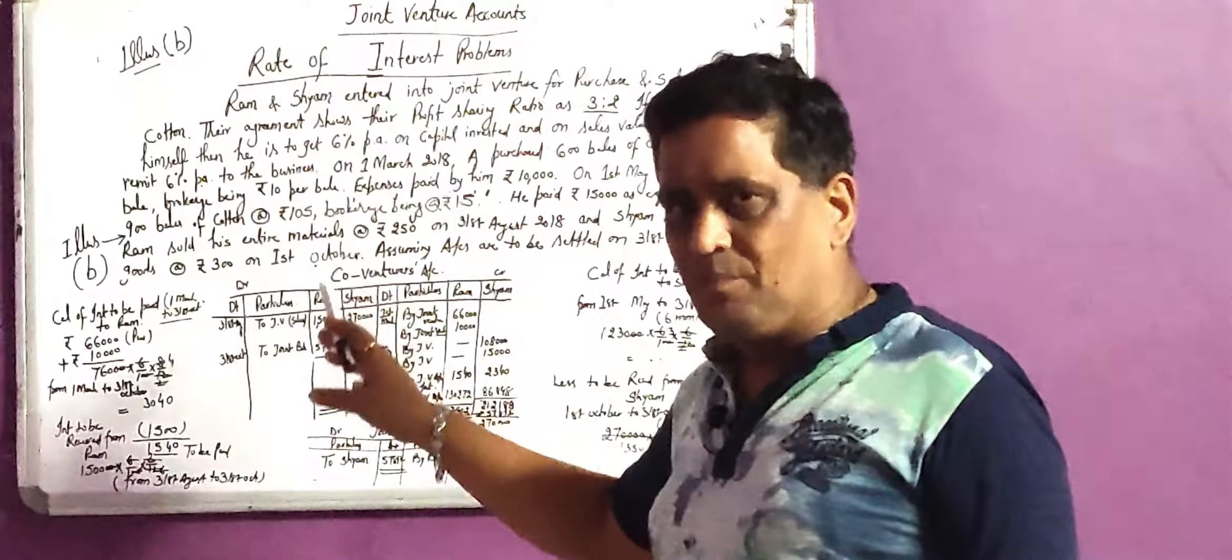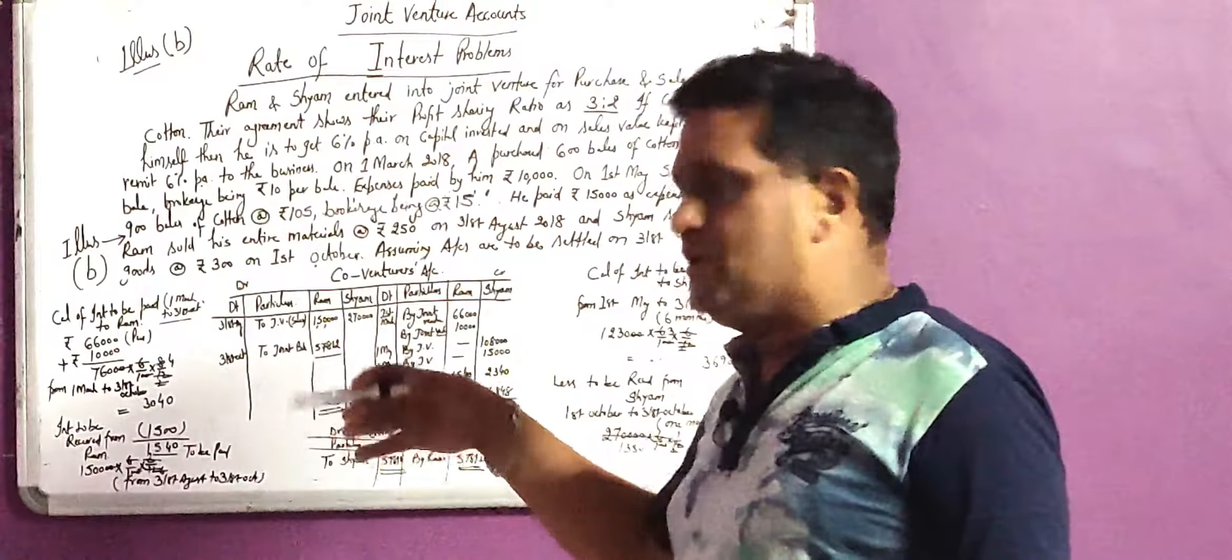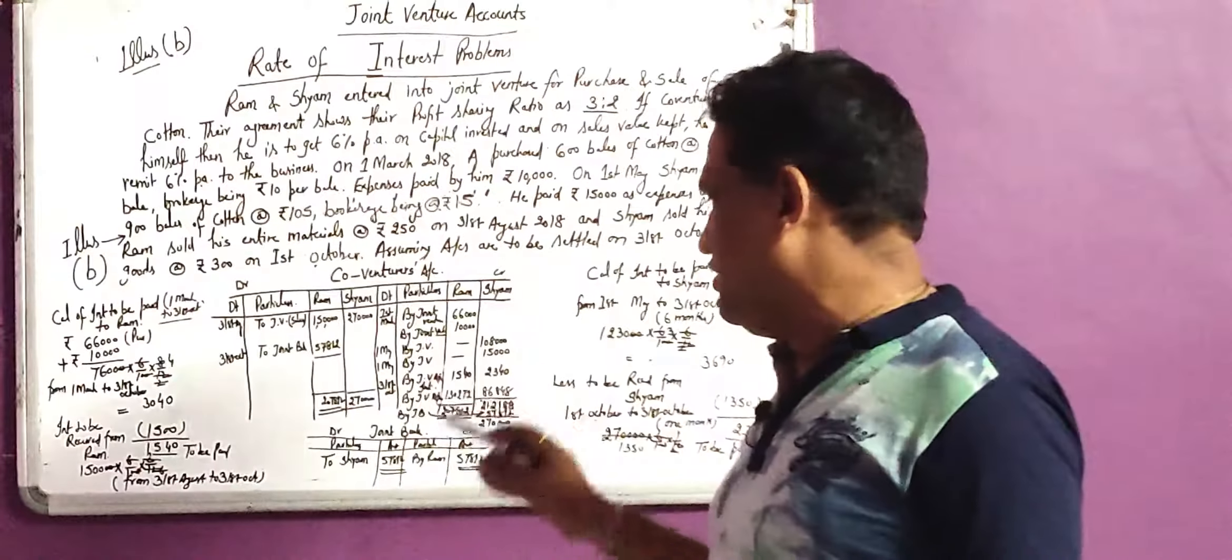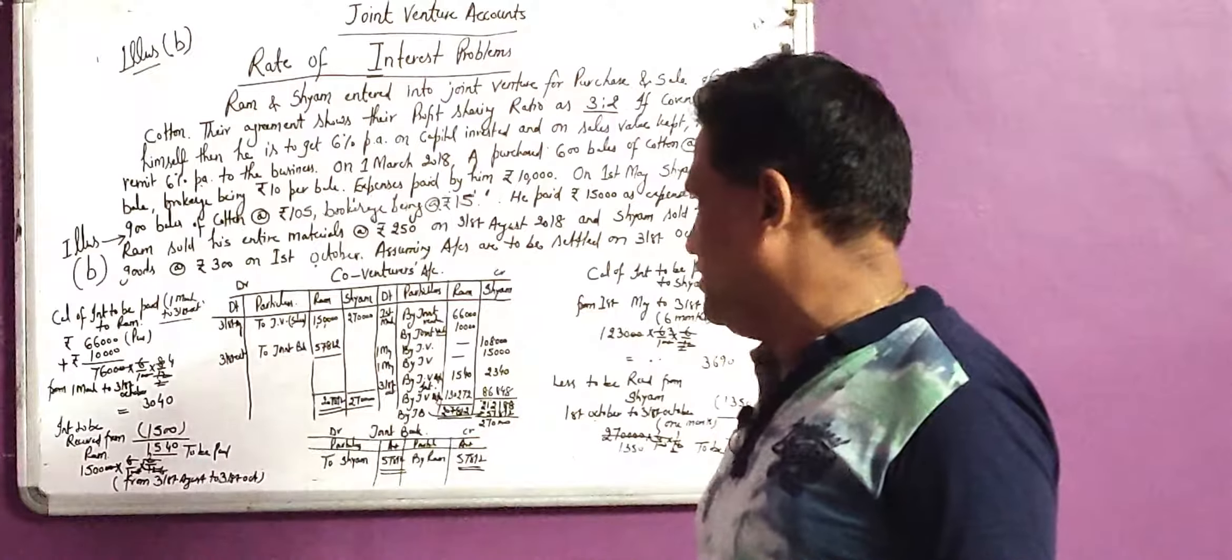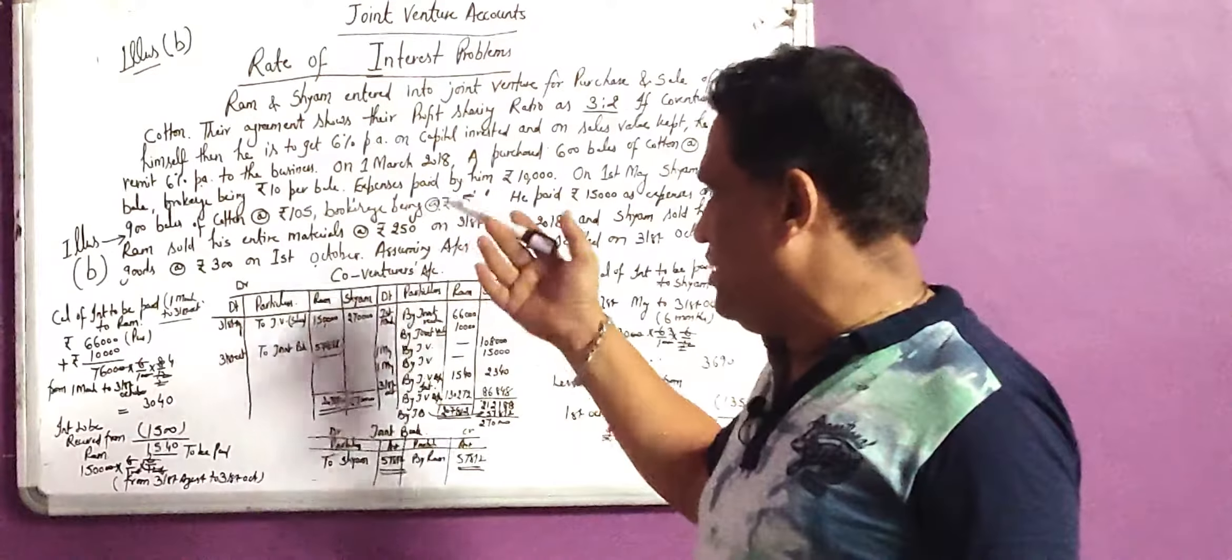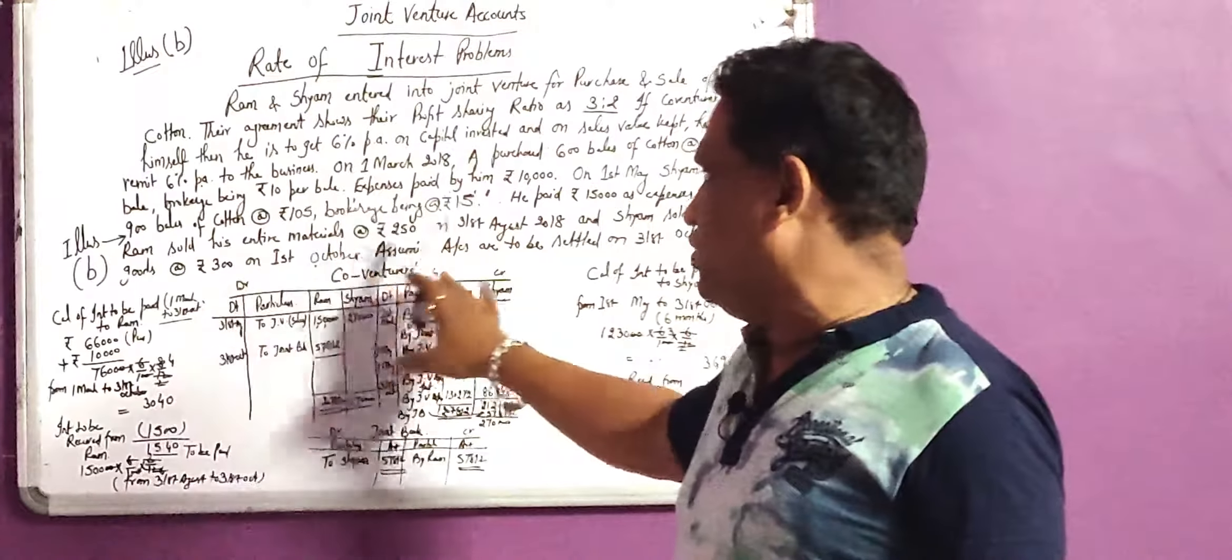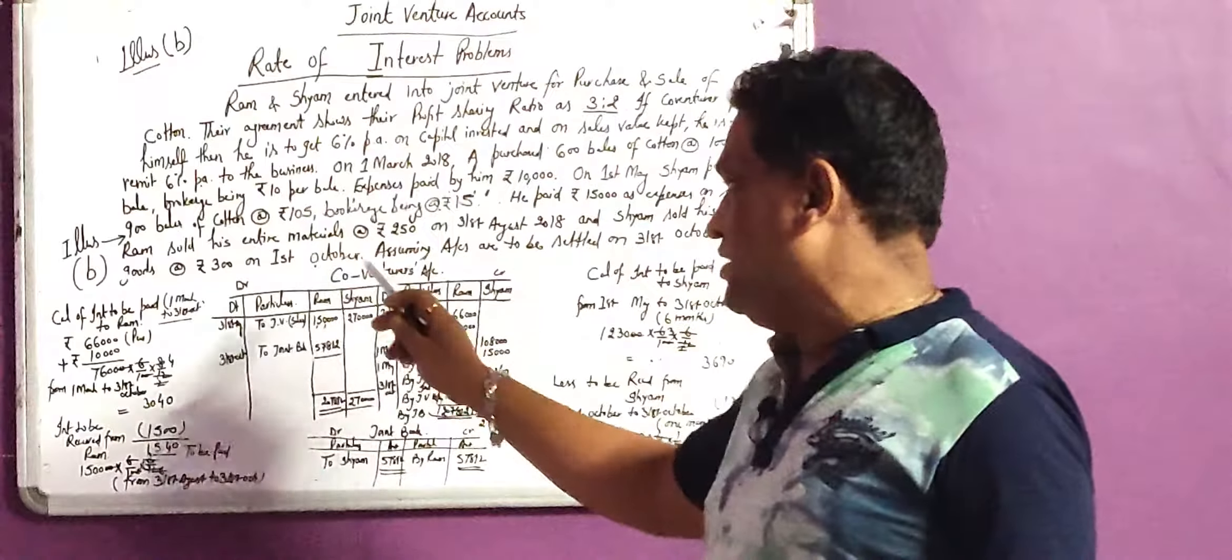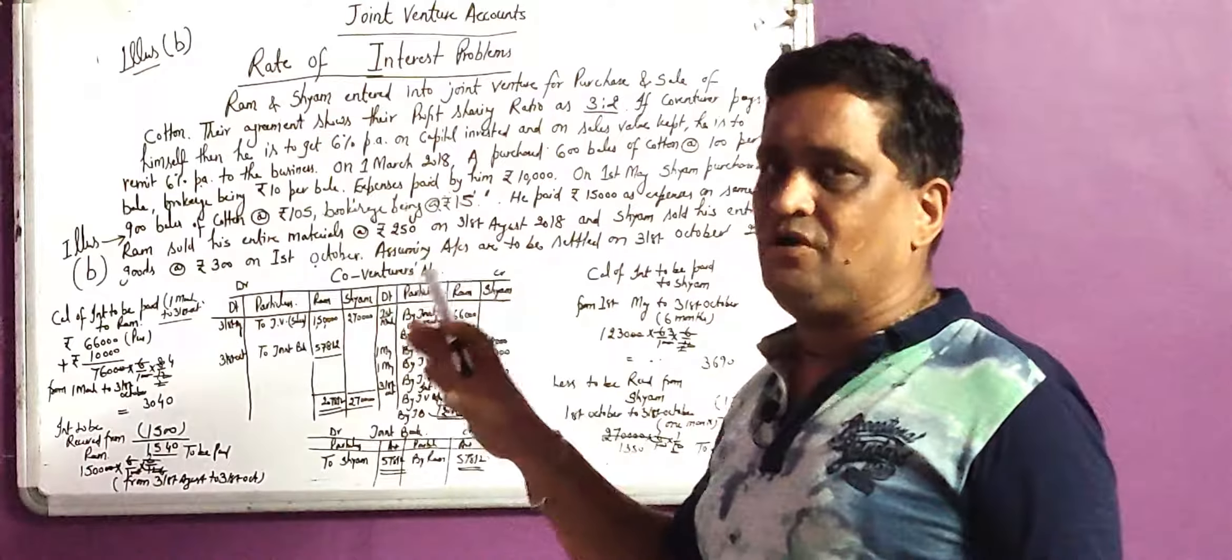We have to prepare co-venturer account also so that I know Ram and Sham's balance, how much Ram has to pay or Sham has to receive, and that will be affected to the joint bank account. We have joint bank account effect to show. We want to show our joint venture. In last illustration, previous illustration, we have prepared posting. We have co-venturer account and we want to do our transaction joint venture co-venturer balance debit and we want to enter joint venture account.